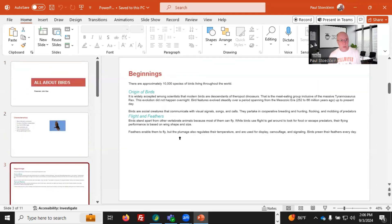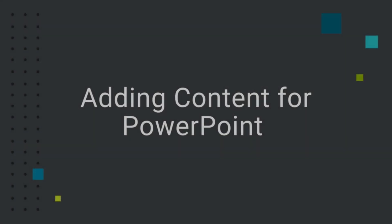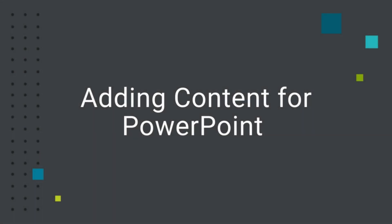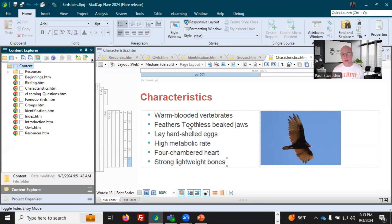Now there are some other things we can do. For example, maybe we want to make this first page fancier, maybe with a background image. So in the rest of the sections of this video, we'll go through these things and I'll change the look of it a little bit. The first thing you're going to need for PowerPoint output is, of course, content. And so in this Flare project, I've got several topics in here.